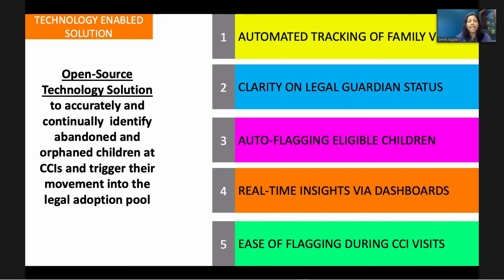So they are not able to move the children into the legal adoption process. What we are proposing is an open-source technology solution which would accurately and continuously identify abandoned and orphaned children at child shelters and trigger their movement into the legal adoption pool, by tracking the relevant indicators in an automated manner, auto-flagging children, and providing real-time insights to local authorities.